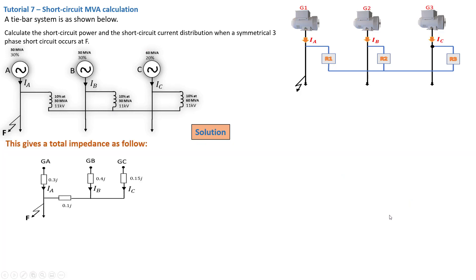Moving forward, on generator A we keep the same thing, and then we've got the 0.1 J per unit reactor leading into generator J — just to make sure that this node here is exactly the same point in the circuit. Now from this perspective, we can clearly see what is the total equivalent impedance. That will be the parallel combination of generator B and generator C section — so that is your 0.4 and your 0.15 in parallel.